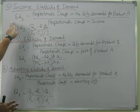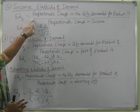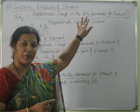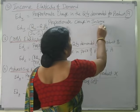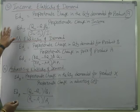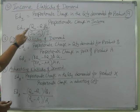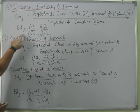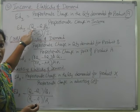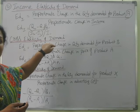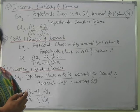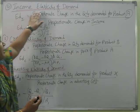Income elasticity of demand can be shown through a formula: EDI equals (Q2 minus Q1) divided by Q1, divided by (I2 minus I1) divided by I1. Q1 is the quantity before changes in income; Q2 is the quantity after changing the income. I1 is the first income before change, and I2 is the income after the change. This makes a difference in the quantity — that is income elasticity of demand.